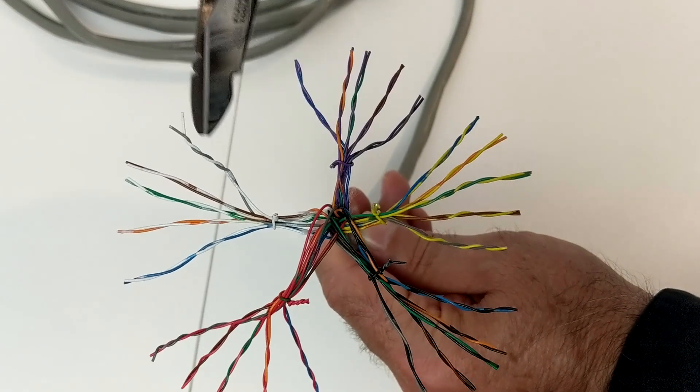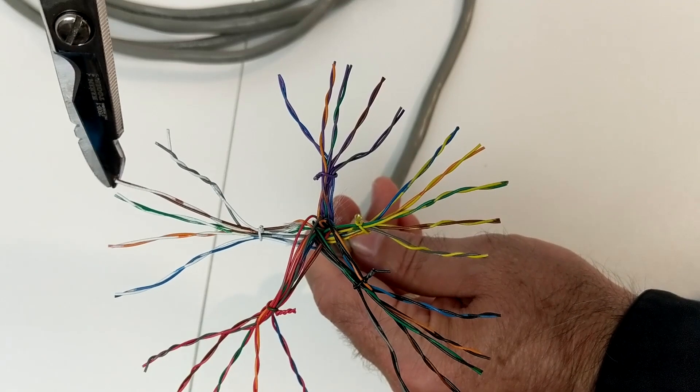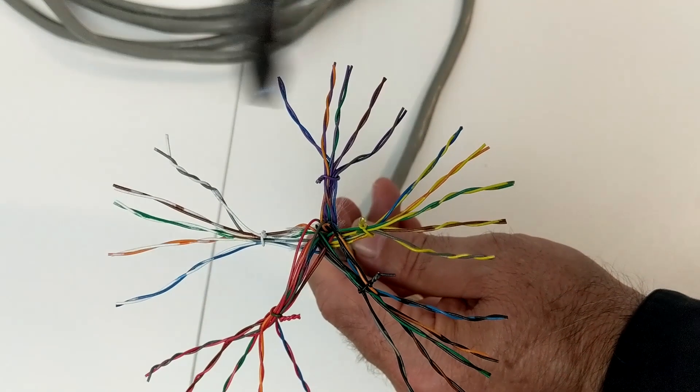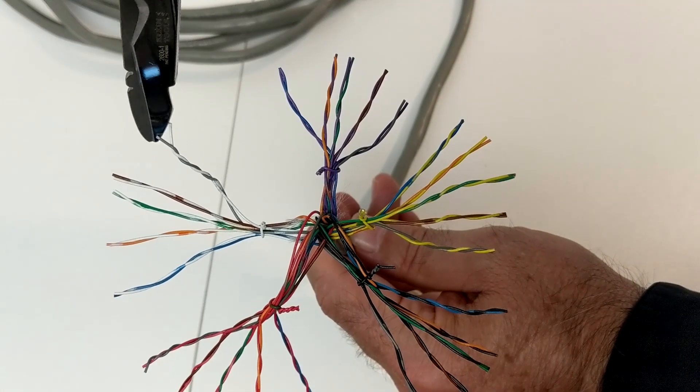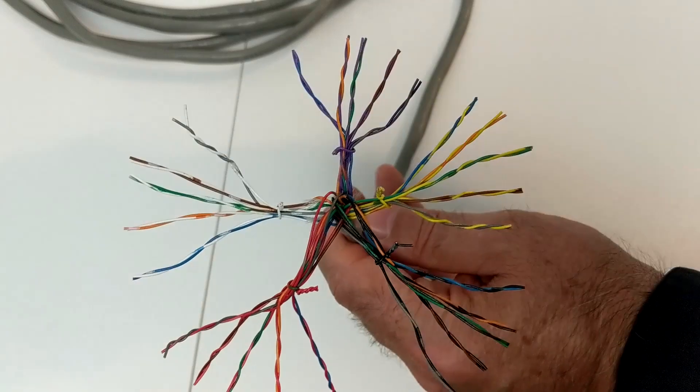So the way it works is within the first group you've got a blue, an orange, a green, and a brown just like we had in that four pair network cable, except with the 25 pair there's one more pair in a group and that is slate. It looks gray but please call it slate.